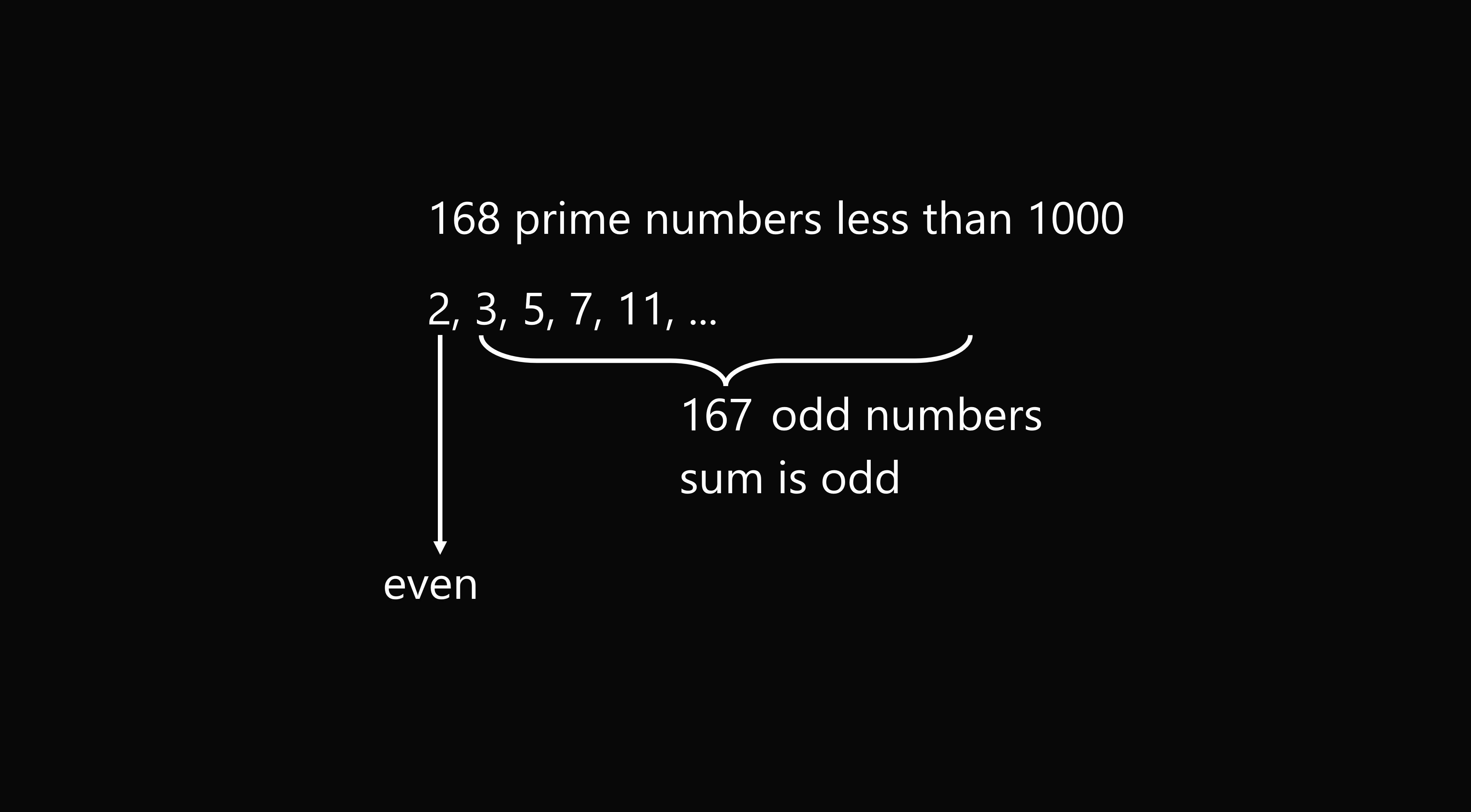2 is an even number, and we're going to add an odd sum to that, meaning the result will be an odd number. So we know that the sum of these 168 prime numbers will be an odd number.